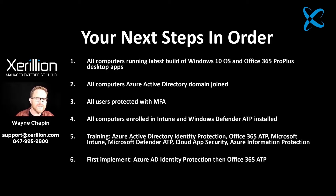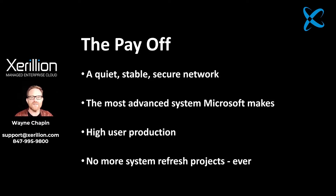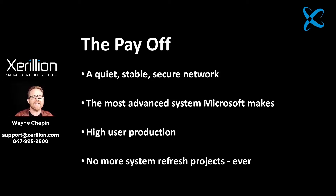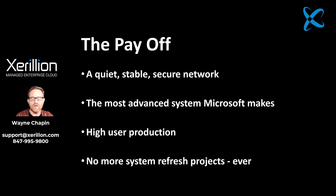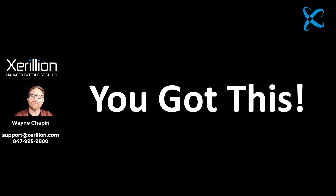Office 365 Advanced Threat Protection is going to be one of your first lines of defense, batting away threats against your emails and files. The payoff for all of this is a quiet, stable, secure computer network with the most advanced system Microsoft makes — high user production for your company and no more system refresh projects ever. When you move into a Microsoft 365 system, you're not going to be refreshing hardware or patching and updating software. All of that's behind you. Now you just have to maintain the system.